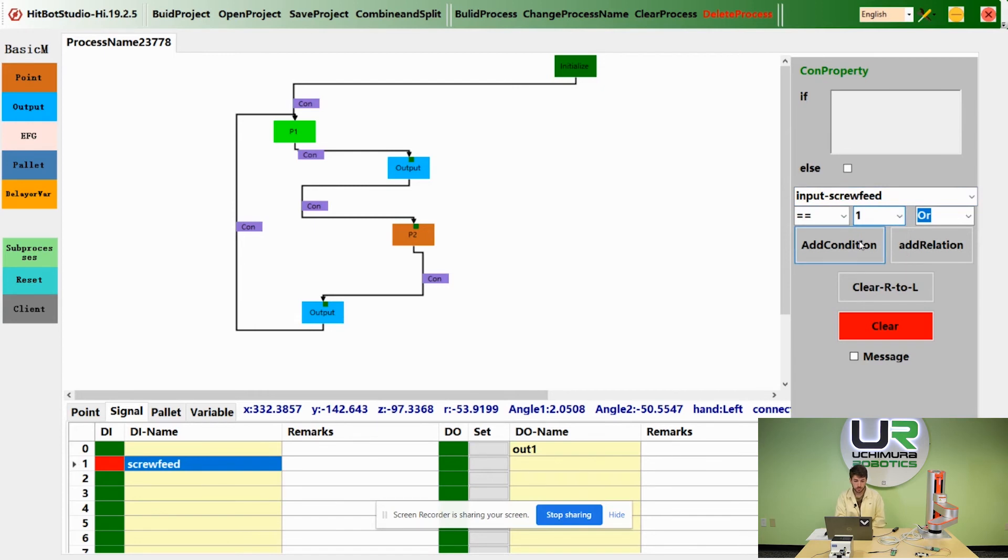So now this path is only going to be passed through if the signal is equal to 1. And right now it is.